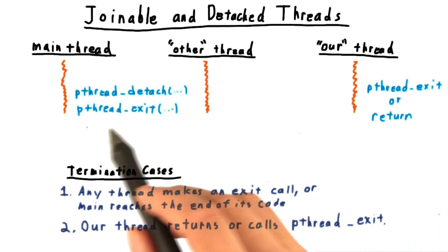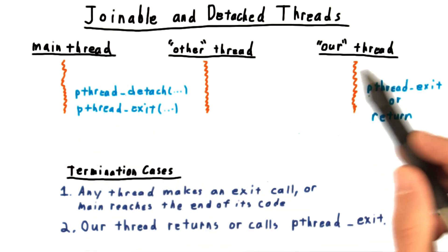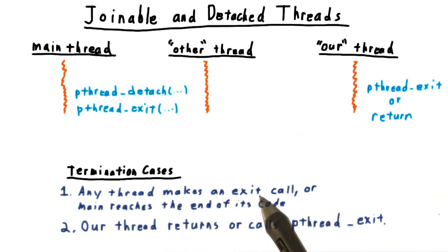Moreover, we have to be careful that main doesn't reach the end of its execution and execute a return statement before the thread is done with its work. As seen in point one, if main returns, then the whole process terminates. So if we want to keep this detached thread going, we have to terminate main with a special call to pthread_exit.